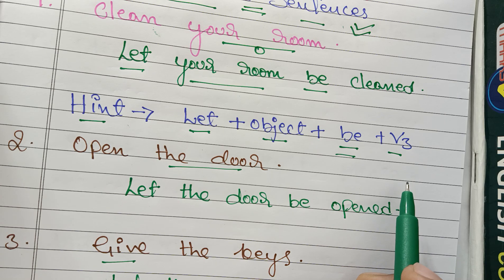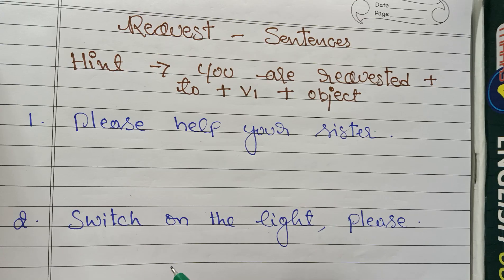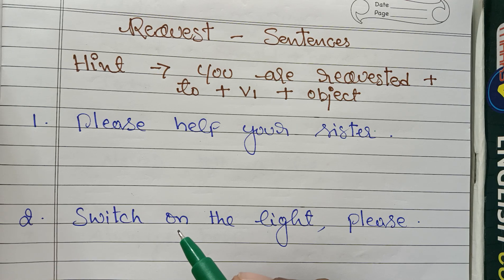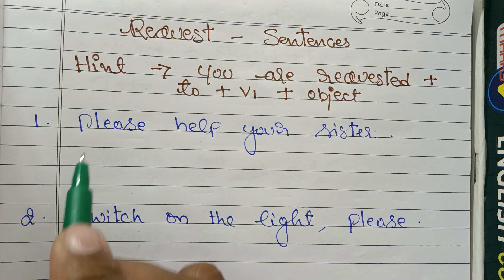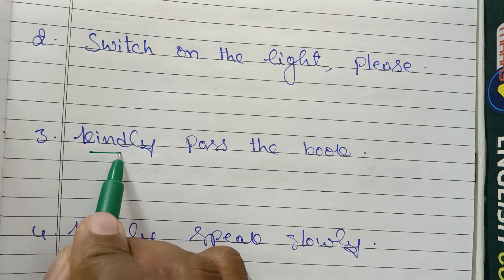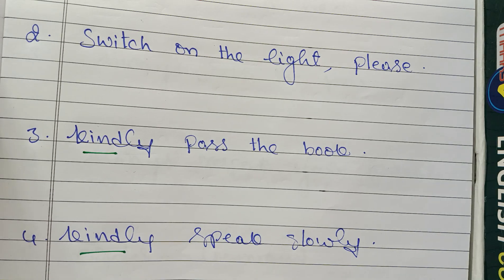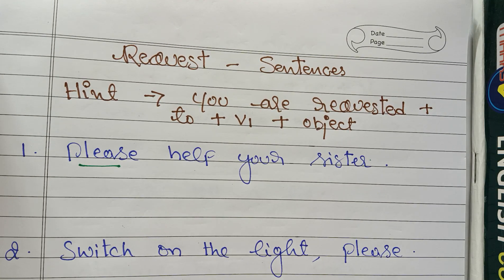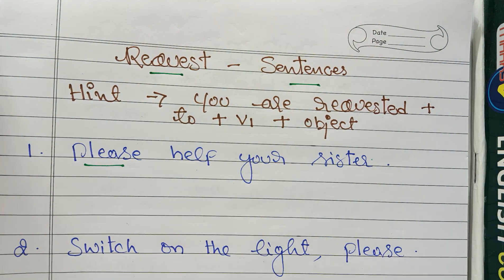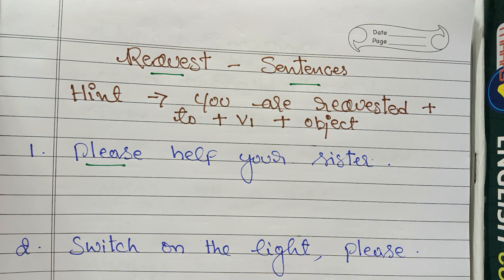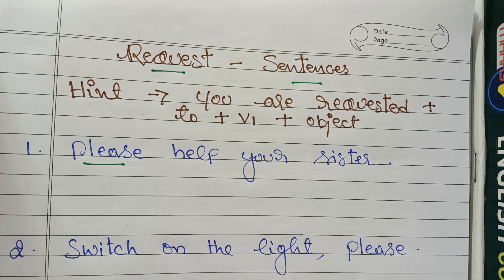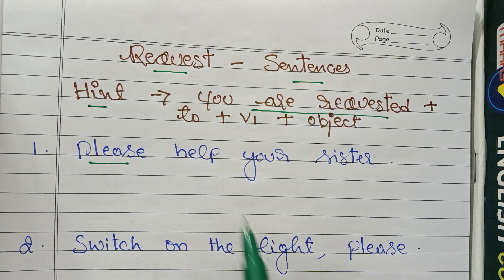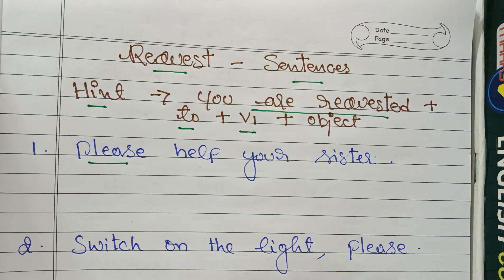Now let's see some other types of sentences. Whenever there is a request, remember this hint. How do you know it is a request? We use the words 'please' or 'kindly.' So whenever those two words appear, you understand it is a request sentence. The structure is: You are requested + to + V1 + object.